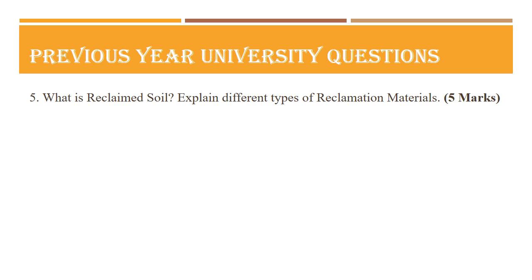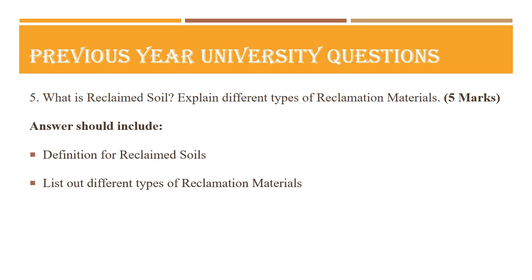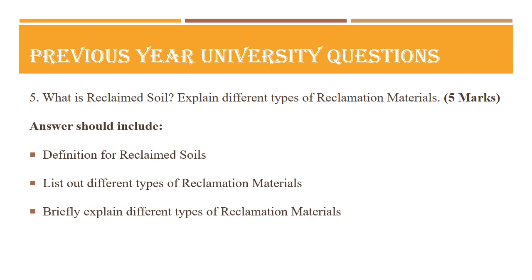The fifth question is: what is reclaimed soil? Explain the different types of reclamation materials, also asked for five marks. First, explain what the reclamation process is and give a definition for reclaimed soils. Then list out the different types of reclamation materials and give a brief explanation on each in two or three sentences, since it is asked for only five marks.